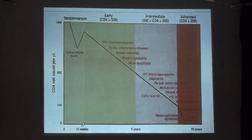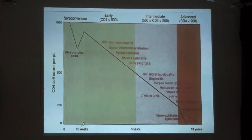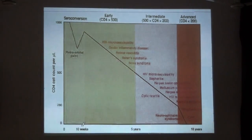This graph shows the downhill course of the disease over time with decreasing CD4 count. It can be divided into early, intermediate, and late stage depending on CD4 counts. When CD4 count is high — above 500 — there are a few ocular manifestations like HIV microvasculopathy, retinal vasculitis, and dry eye syndromes. When it is intermediate, between 200 to 500, you can have herpes zoster ophthalmicus, molluscum contagiosum, and herpes simplex infections.